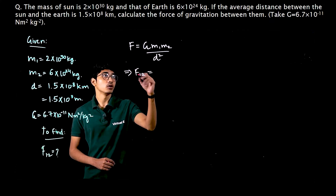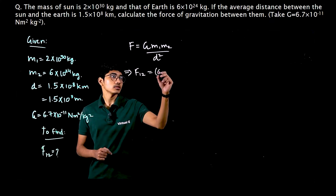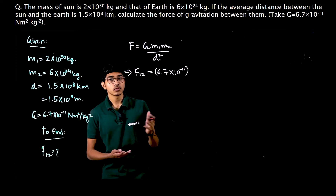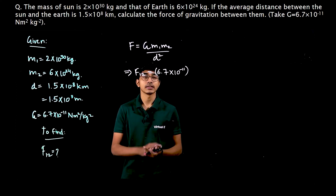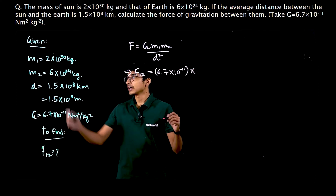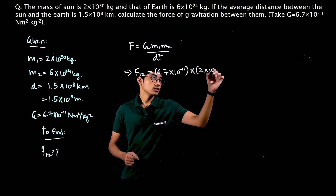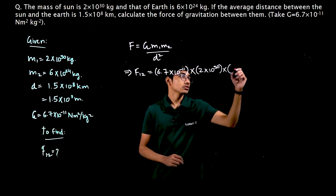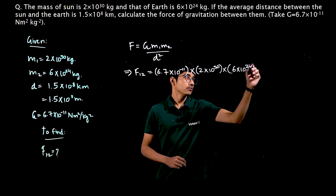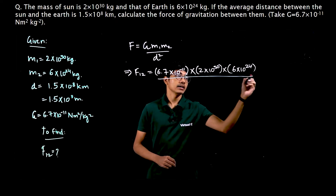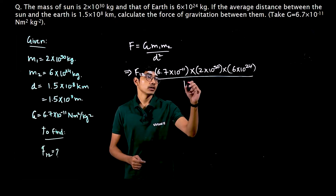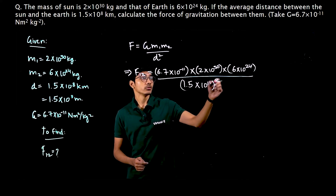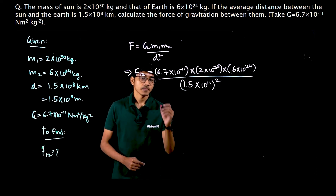So the force of gravitation is G, that is 6.67 into 10 raise to minus 11 — this quantity is best if you remember it because it is always given. Multiplied by m1 which is mass of the sun, that is 2 into 10 raise to 30, multiplied by m2 which is mass of earth, 6 into 10 raise to 24. Division mein distance jo given hai uski 1.5 into 10 raise to 11, and over here we have a square. Don't forget to write this square.